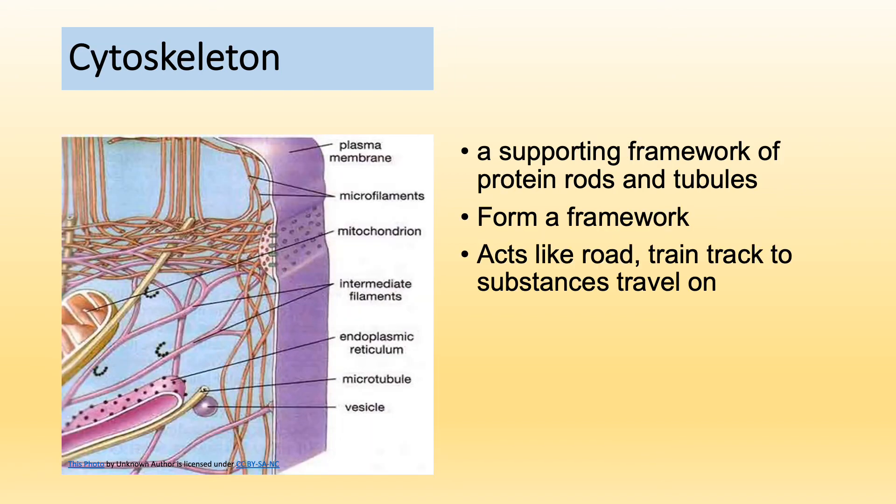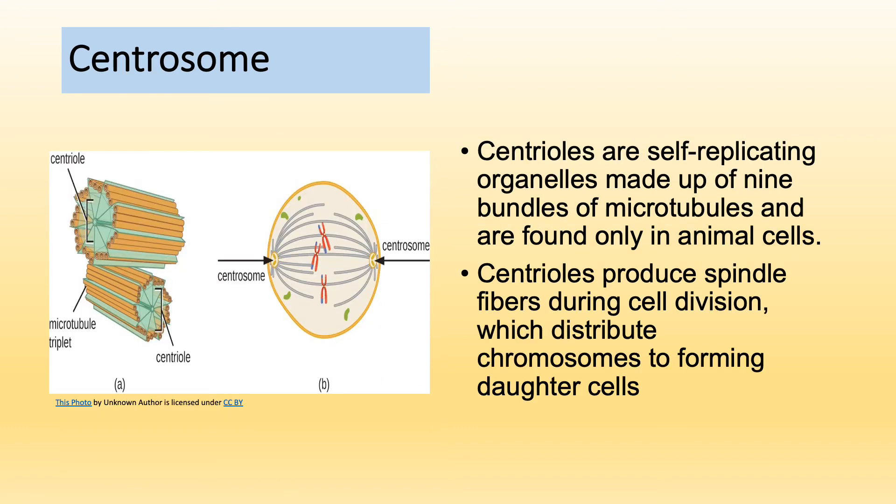The cytoskeleton is a supporting framework of protein rods and tubules. You can see in this picture microfilaments, intermediate filaments, and microtubules. They form a framework for the cell and act like a road or train track that substances travel on.